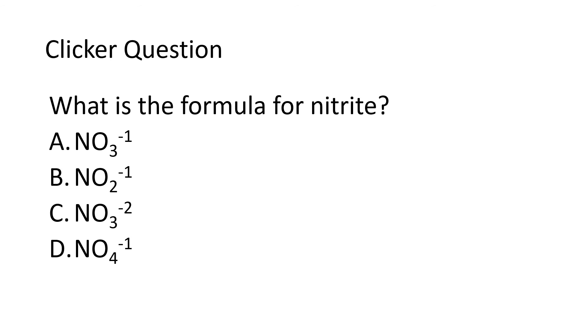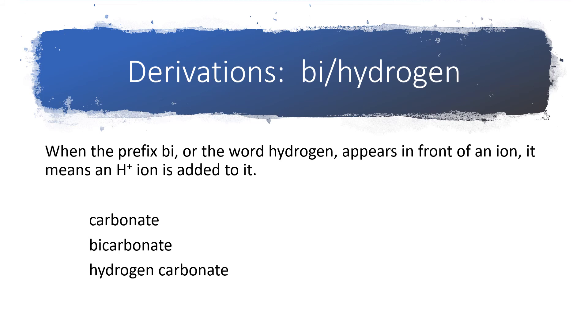All right. So, if we have the nitrate ion, which is one of the ones to memorize, that is going to be NO3 with a minus one charge. When -ate gets converted into -ite, we're going to lose one oxygen. So, nitrite will be NO2 with a minus one charge. Everything else stays the same, but we lose one oxygen. So, the best answer here would be answer B.